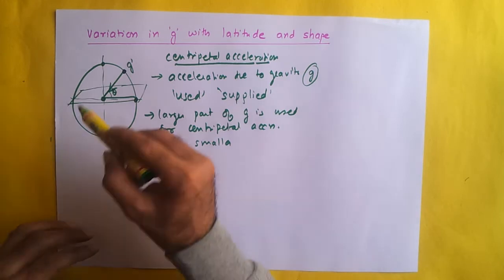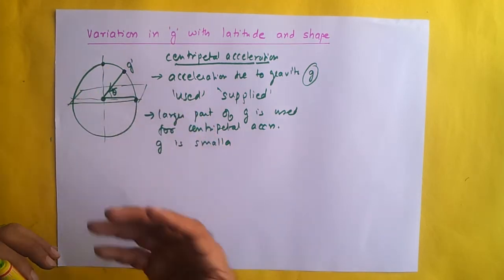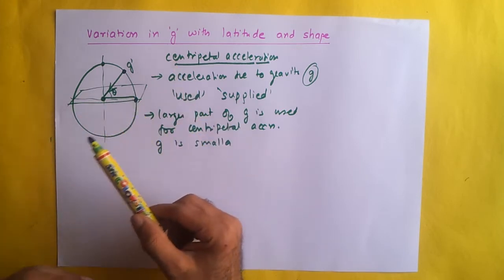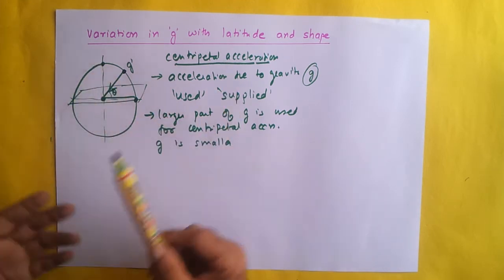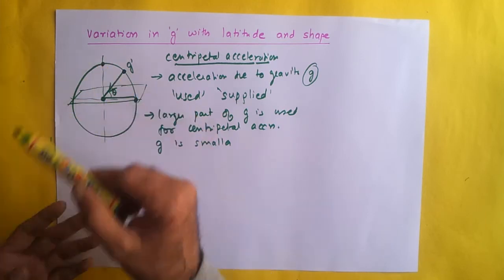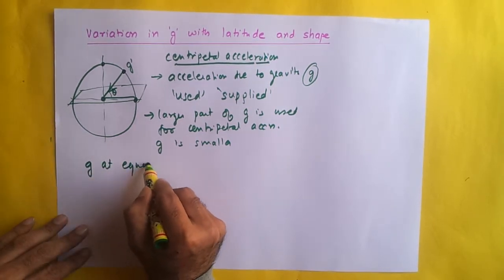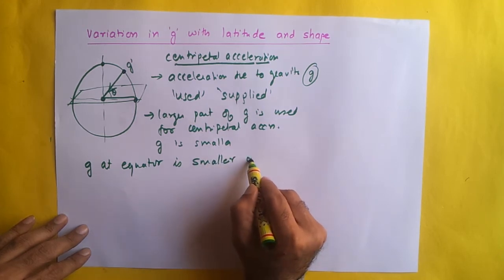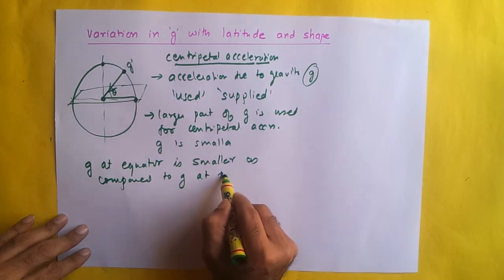G is smaller at the equator because a larger part is used for centripetal acceleration, whereas at the poles a very small or negligible part is used for centripetal acceleration, so we get a higher value of g. The point at the pole is rotating in an extremely small circle or not rotating at all theoretically, whereas the object at the equator is rotating at a very high speed through a larger circle.